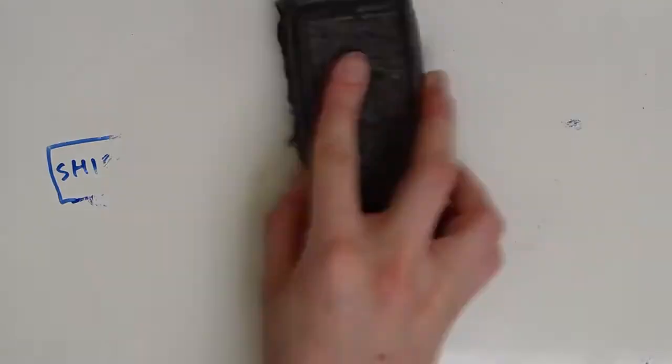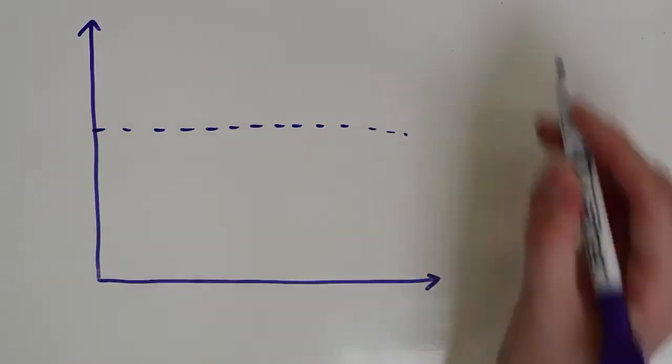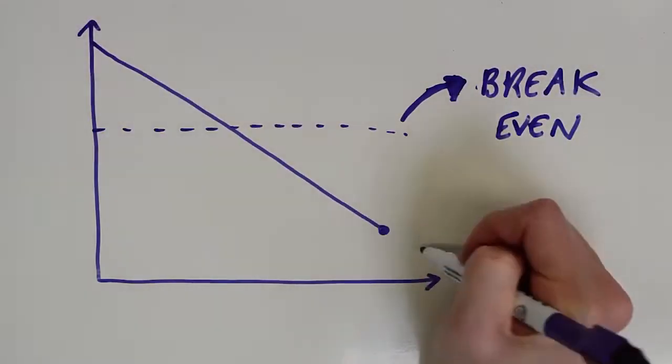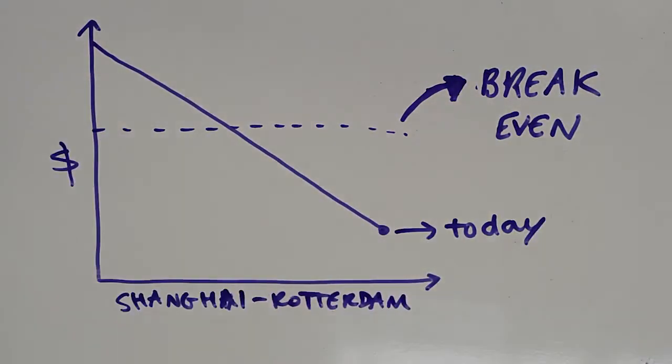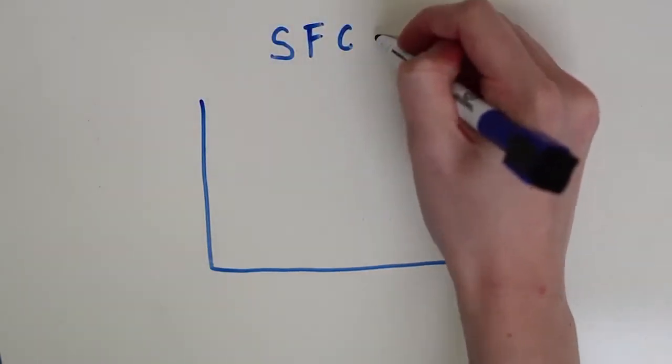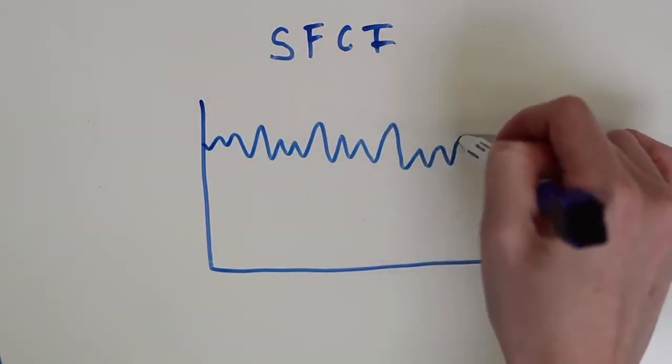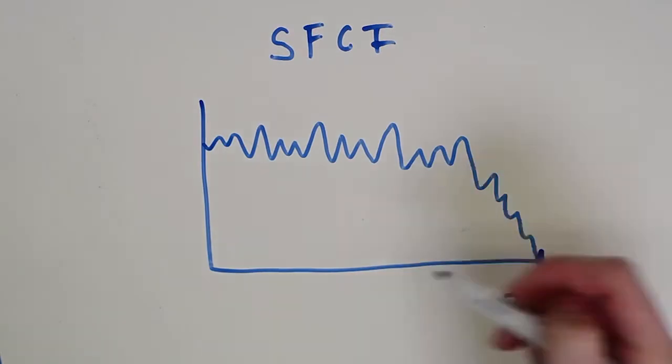Routes like Shanghai to Rotterdam have dropped nearly 50% since April to a quarter of what is considered a break-even rate. The Shanghai Containerized Freight Index, a measurement of freight going to and from China, is now at an all-time low, 44% below its last big drop during the 2008 financial crisis.